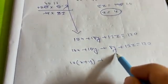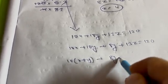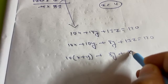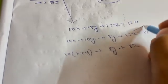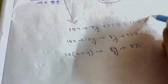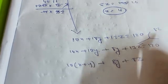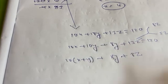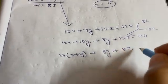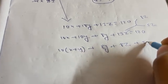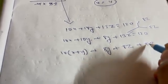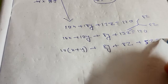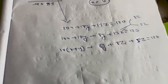We further split this into 8y + 8z and 5z, so the expression becomes 10(x + y) + 8(y + z) + 5z = 120, and the remaining term is 5z.